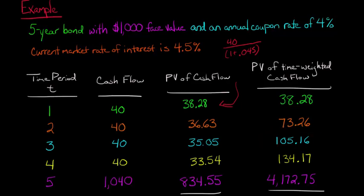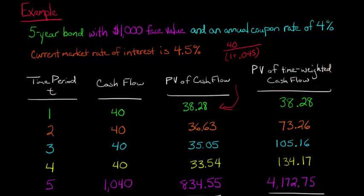So we go ahead and in each case, we take the time period, that's our T, that time period. And we multiply it by the present value of the cash flow. And that's going to give us the present value of the time-weighted cash flow. Now, once we have that, we can go and sum up all of these time-weighted cash flows, the present value of those time-weighted cash flows. That's going to give us $4,523.61.